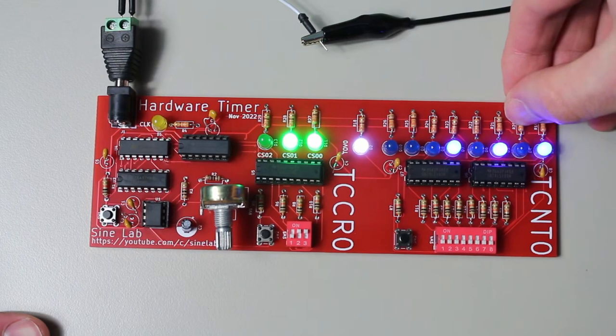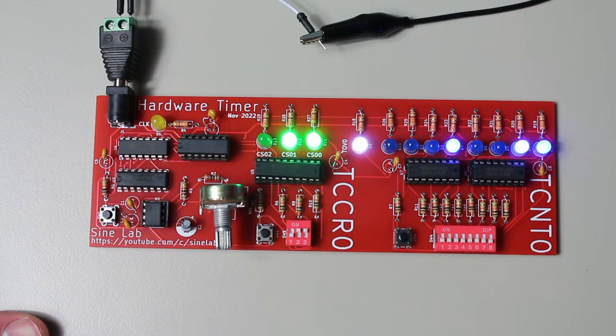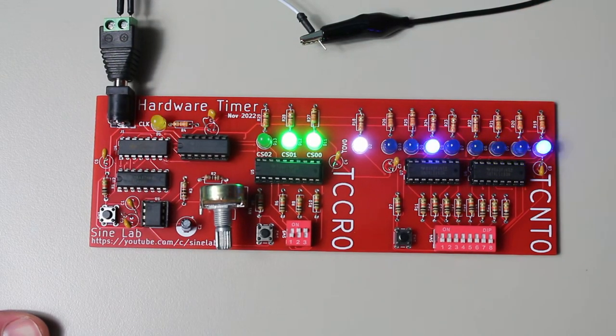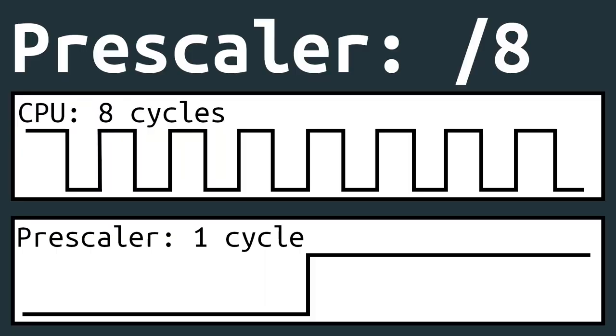After that though, we get into the prescaler region. What is a prescaler? Well, it is a device that divides the CPU clock by a certain amount. If, for example, we use the first prescaler option of dividing by 8, that means it will take 8 CPU clocks to clock the timer just once. The same can be said for the other options but with increasing division.